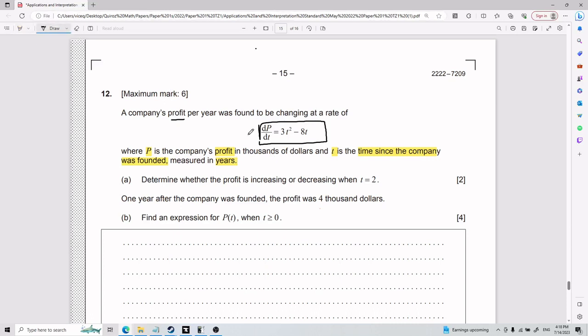Part A determines whether the profit is increasing or decreasing when t equals 2. Okay, let's figure it out.